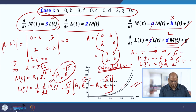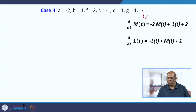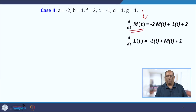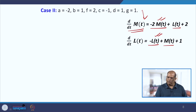Let us take Case 2 where A = −2, B = 1, F = 2, C = −1, D = 1, G = 1. Plugging these values in, you can see that the rate of change of love for Majnu has a negative term and a positive term, and similarly for Laila. Some sort of forgetfulness appears here, causing the partner to lose interest due to their own feeling.